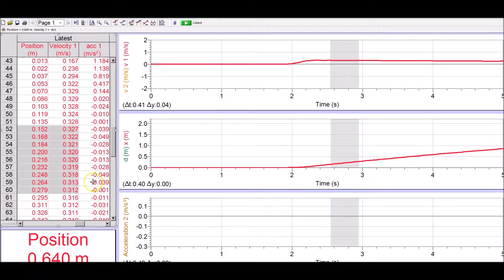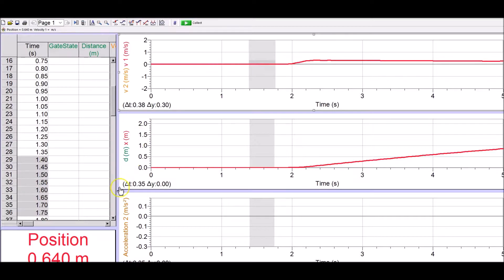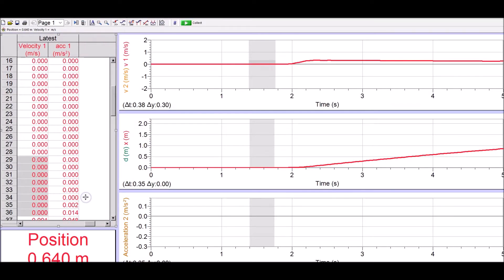So any information you need is pretty much highlighted. If I highlight a different section, it will highlight different sections of the data table. And I move that over. You can see this is before I pushed it.